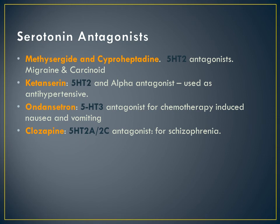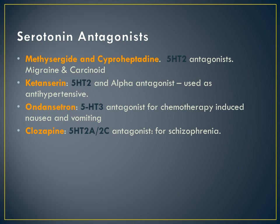The serotonin antagonist slide is also very important. Methisargide and cyproheptadine are 5-HT2 antagonists used for migraine and carcinoid tumour. In carcinoid, increased serotonin causes severe diarrhea. Ketanserin is a 5-HT2 and alpha antagonist used as an antihypertensive. Ondansetron is a 5-HT3 antagonist useful for chemotherapy-induced nausea and vomiting. Clozapine is an antipsychotic with antagonist effects on 5-HT2A and 2C receptors. Each receptor is a potential MCQ.